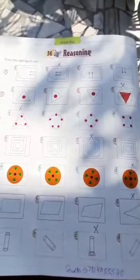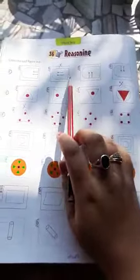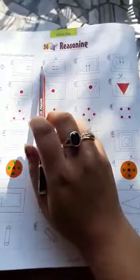Good morning to all. Today we are going to do chapter number 36, Reasoning of GK. Here we have to find the odd figure out and we have to cross it.